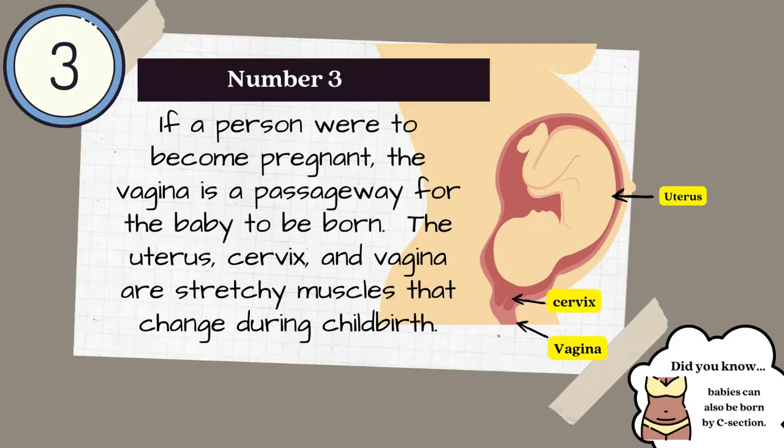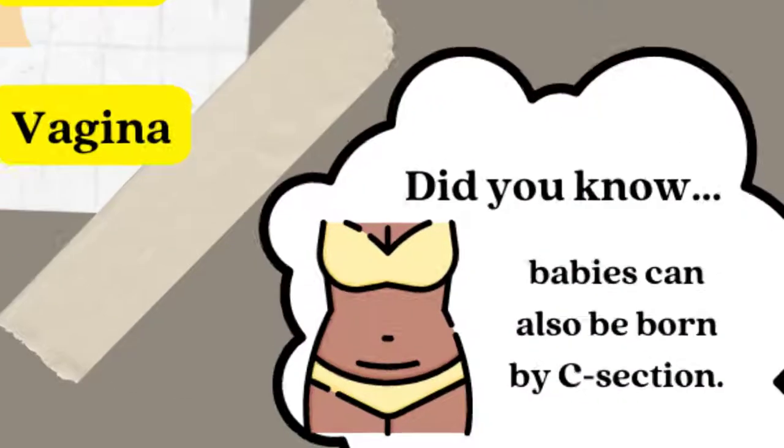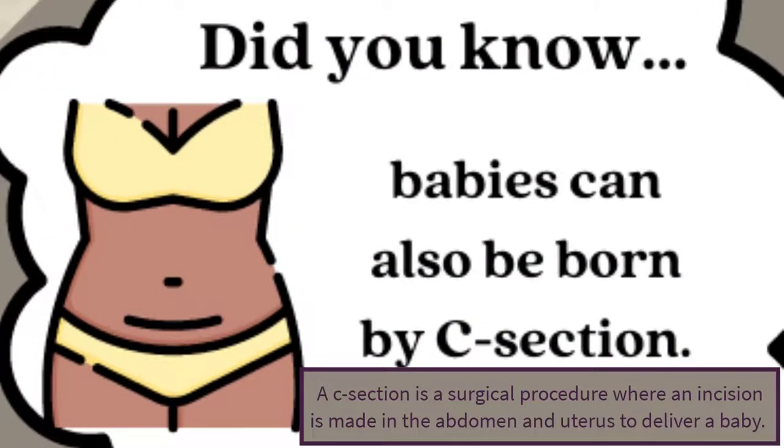Number three: if a person were to become pregnant, the vagina is a passageway for the baby to be born. The uterus, cervix, and vagina are stretchy muscles that change during childbirth. Did you know babies can also be born by C-section?